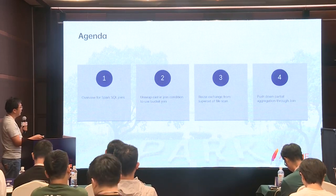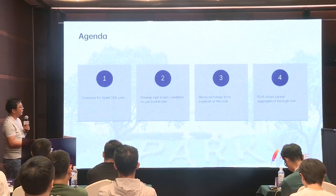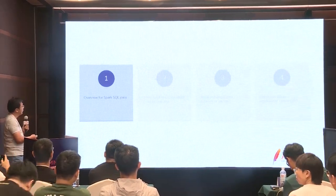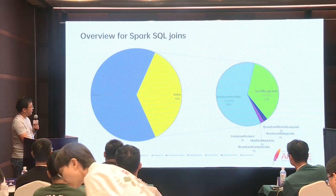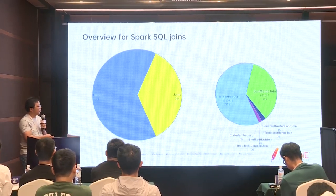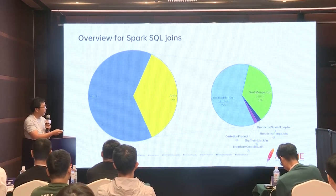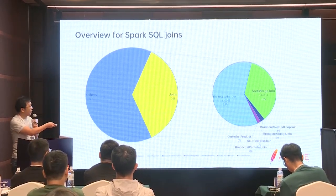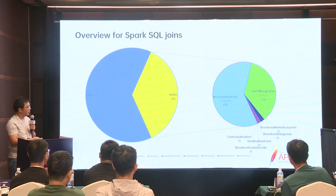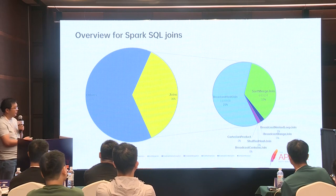I will introduce four aspects. I want to explain when we have join optimizations. The first thing we use is SortMergeJoin. Next is BroadcastHashJoin and BroadcastNestedLoopJoin. We have to look at BroadcastNestedLoopJoin in particular situations. We also need to look at two ShuffleJoin types: the first is SortMergeJoin.